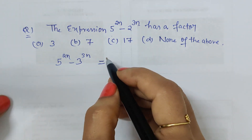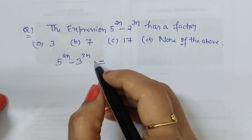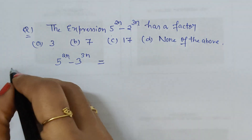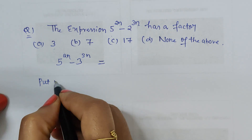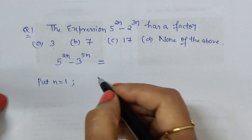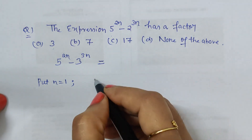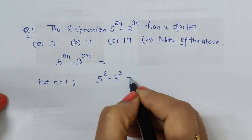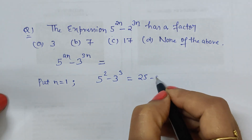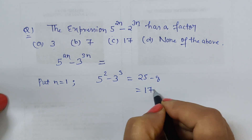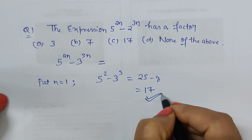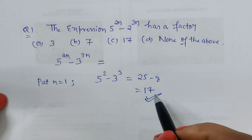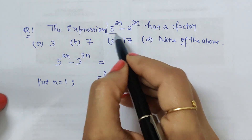To get an idea for the factor, if I put n equal to 1, what I get is 5 squared minus 2 cubed, which is 25 minus 8, and the answer is 17. That means 17 will be the factor for this expression.